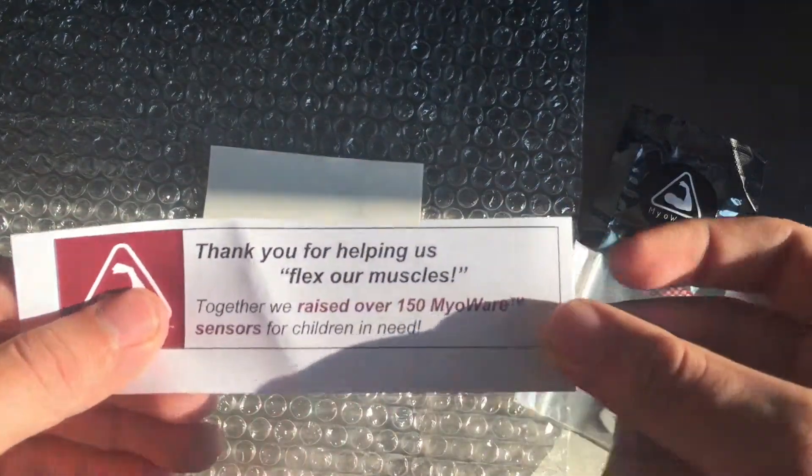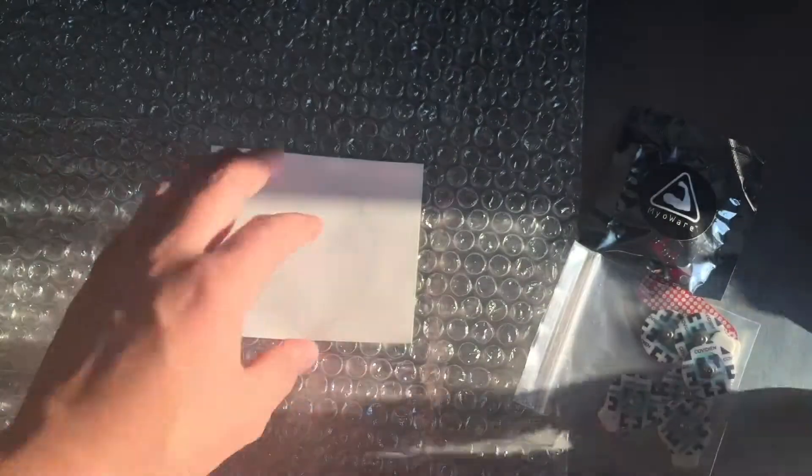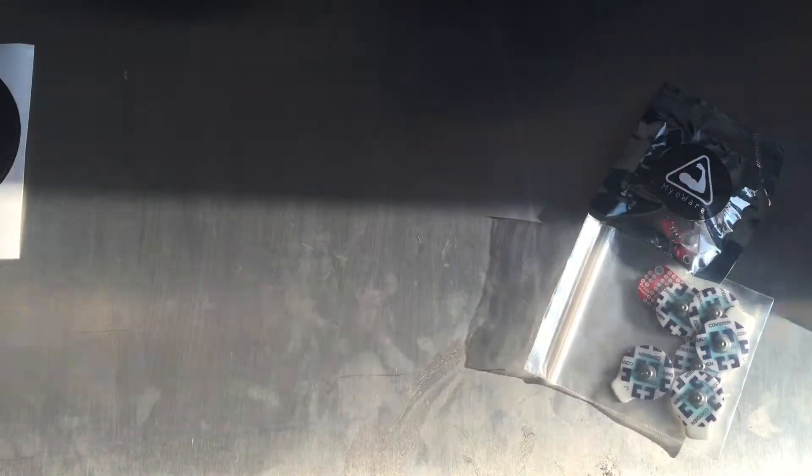In the box you get 5 electrodes, the Myoware shield itself, as well as a prototyping shield, a thank you note and a sticker. I think I'm gonna paste it on my 3D printer.